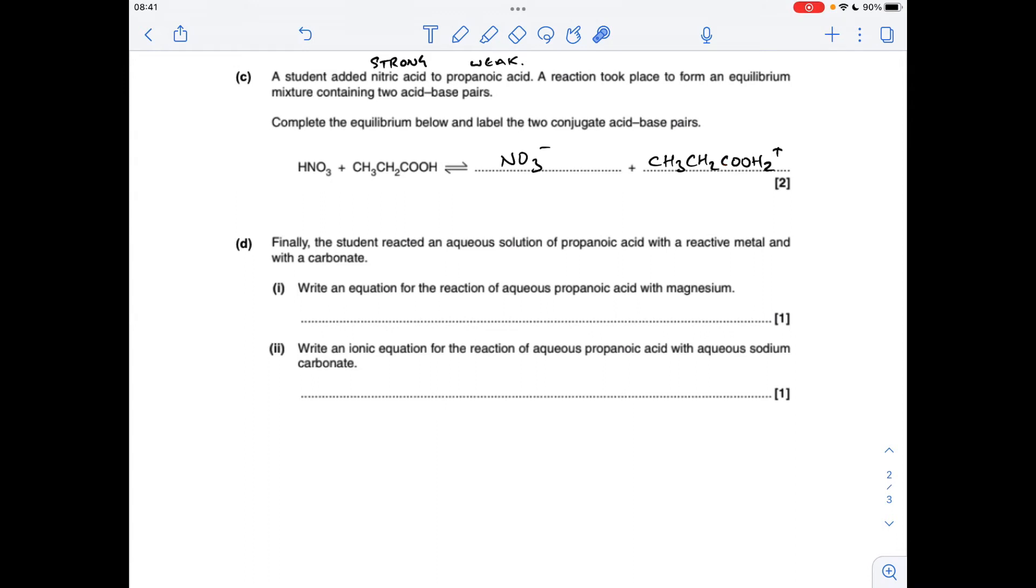So looking at the HNO3, what's it done? It's donated a proton to that, and it's become that. So that's a pair, I've just highlighted them in one colour, but obviously you wouldn't be able to colour them in the exam, so we'll call this pair 1. So this is acid of pair 1, this is going to be the base of pair 1. If you think about this, it could accept a proton and go back to that, so that is a base.